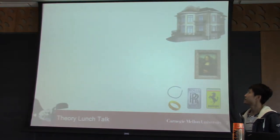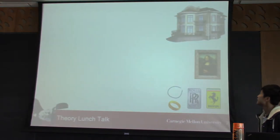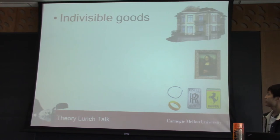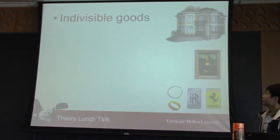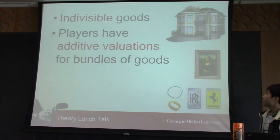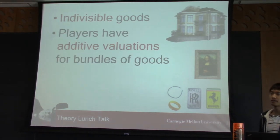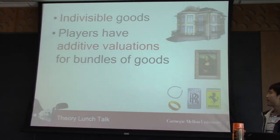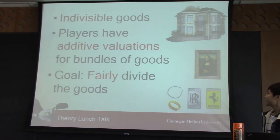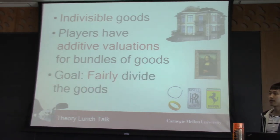Let's jump into the basic setting. We are considering individual goods like houses and picture cards. We are assuming players' valuation function is additive. That means every player evaluates a bundle of items by summing up the value of every single one of them. Our goal is to design a mechanism that can fairly divide those items among players.